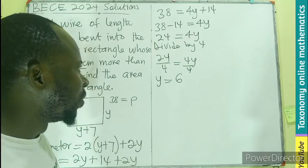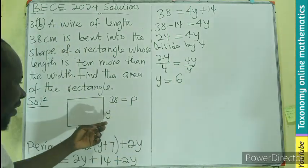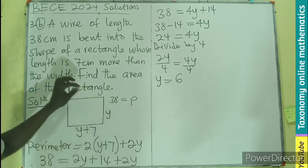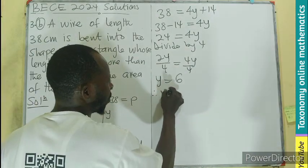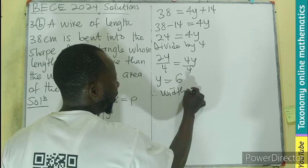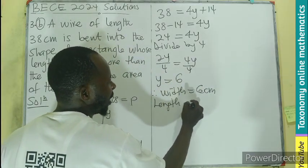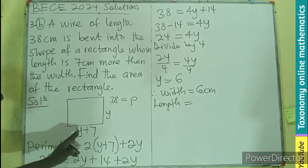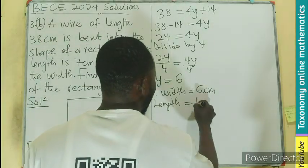So if Y is 6, what are we saying? We are saying that is the width. So therefore, the width is going to be 6 cm, the length is going to be 6 cm plus the 7, and that will be 13.